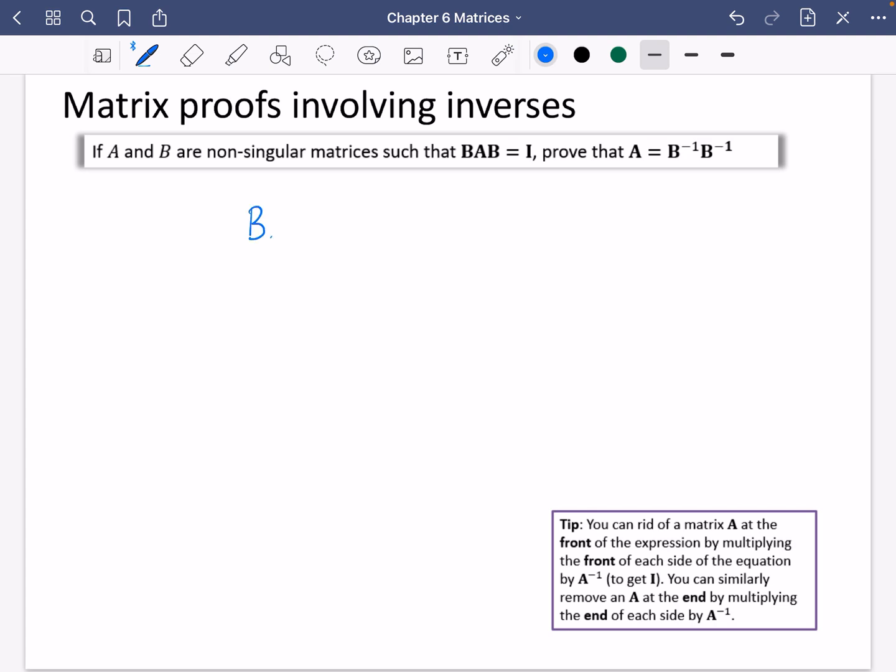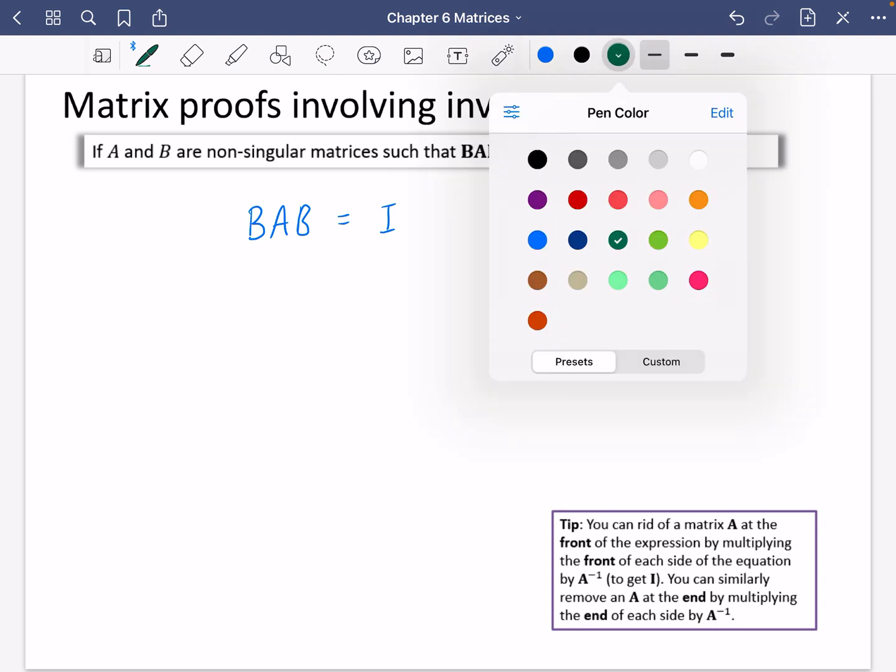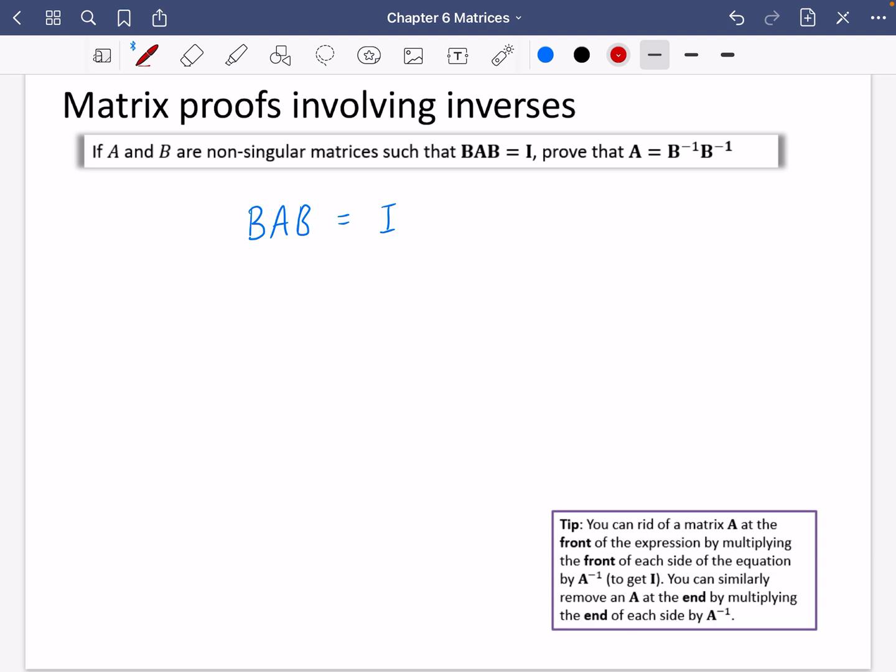So I'm going to say that BAB is equal to I. I'm just going to write down exactly what it is that they've got written. And then let's take a different colored pen here. What I'm allowed to do is if I want to try and find out what just A is equal to, I've got this B on either side of it. And so I want to get rid of those. Now, you can't divide by B on both sides. But what you could do instead is you could multiply this beginning part here by the inverse of B. And I could also multiply this part here by the inverse of B.